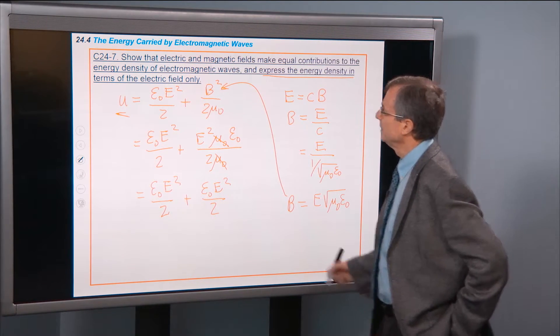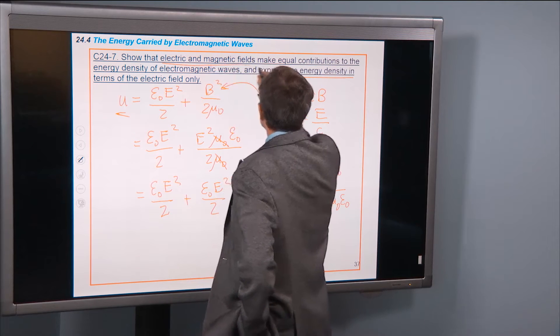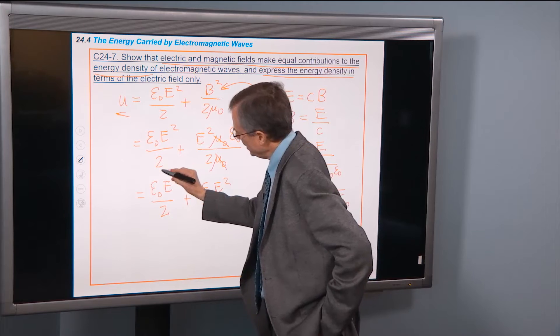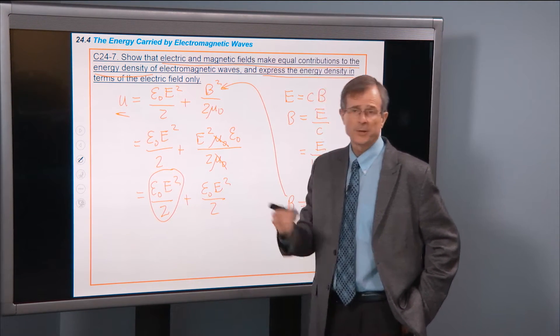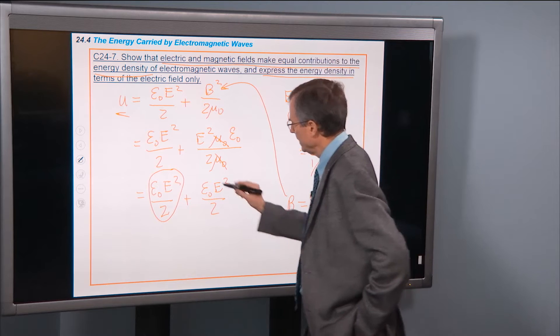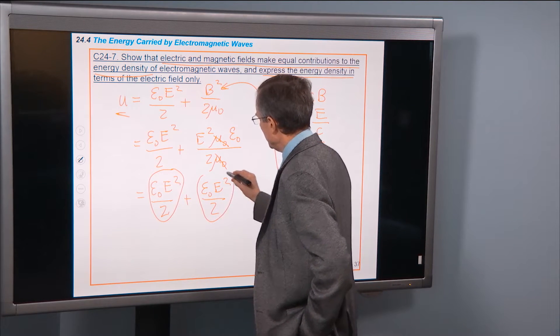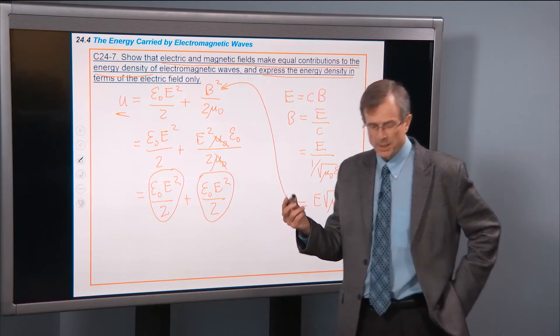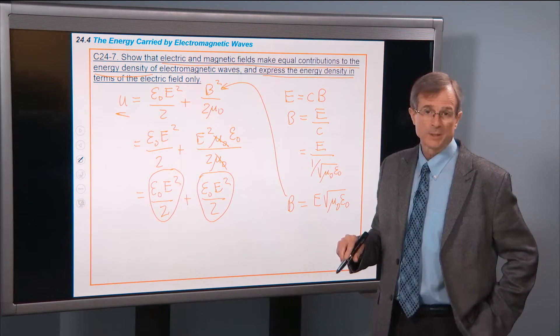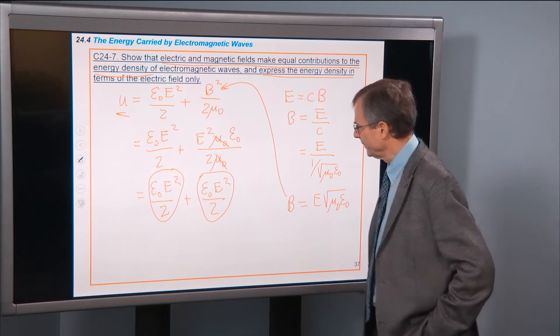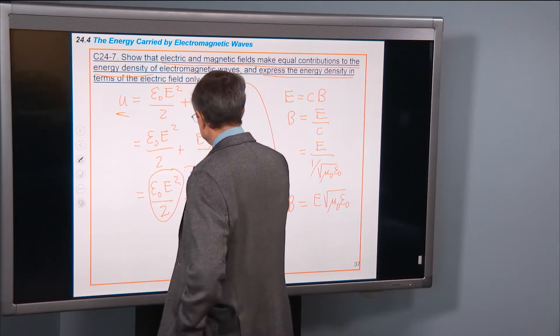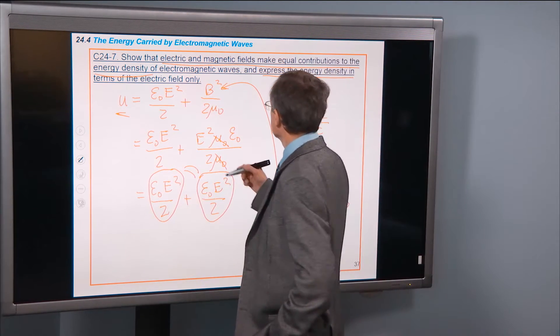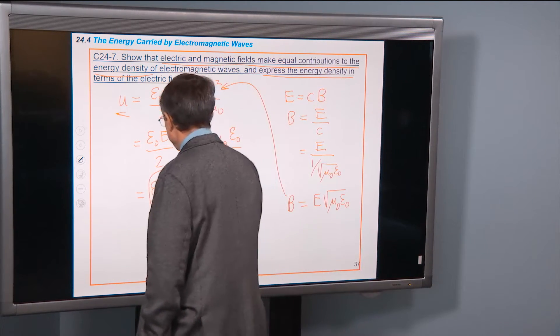have we shown that electric and magnetic fields make equal contributions to the energy density? Here's the contribution of electric fields. We already knew that. Here's the contribution of magnetic fields. All we've done is to rewrite it using c is 1 over the square root of μ0ε0, and e equals cb. Those contributions are equal to each other. So we've proved that.